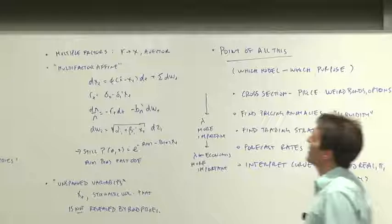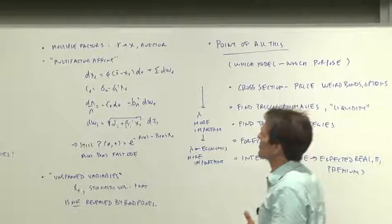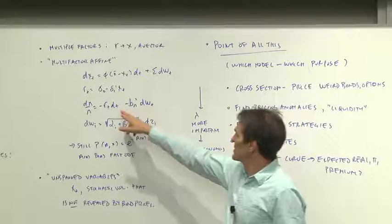You want more factors? The way we do real term structure models is we have at least three x's in the place of the single r. So I wrote down here a multi-factor affine model, which is a typical style of the sort of model that's being run. X is a vector, an AR1, then the interest rate is a function of the state variables.